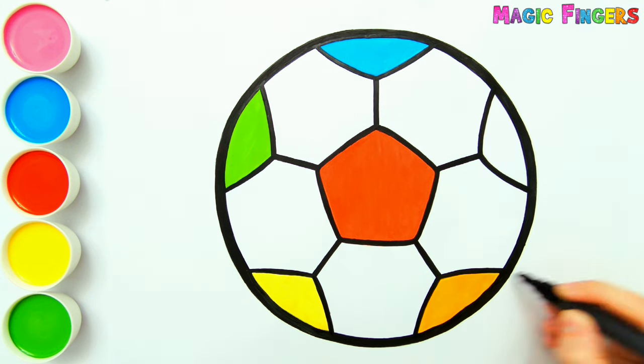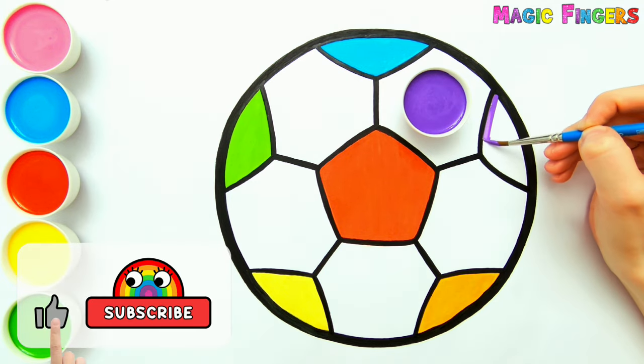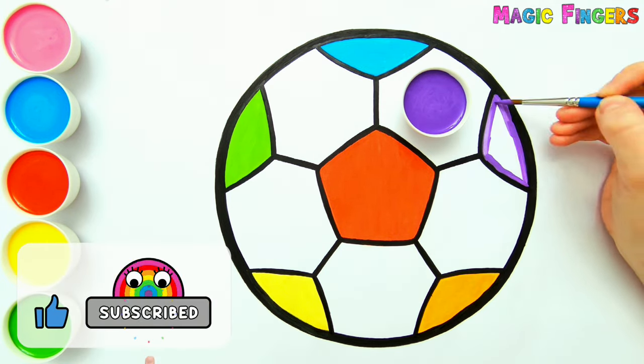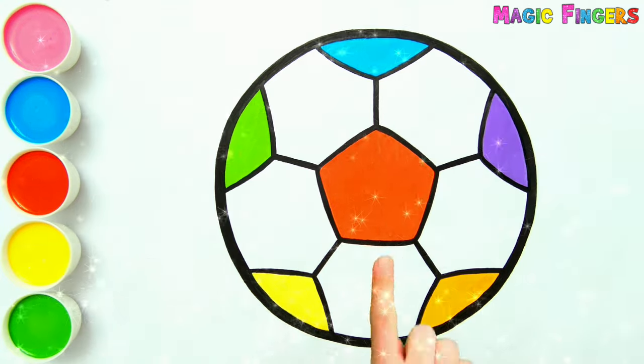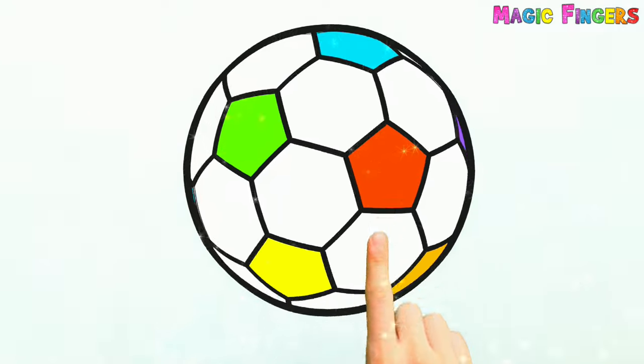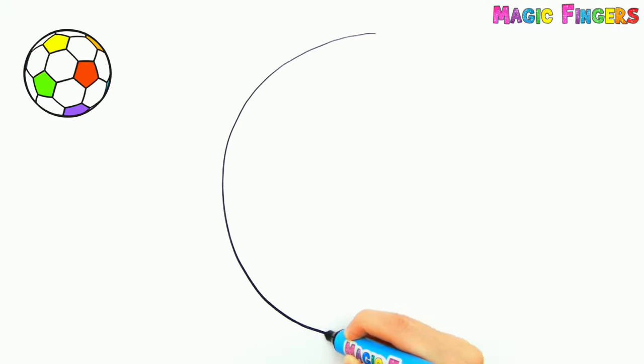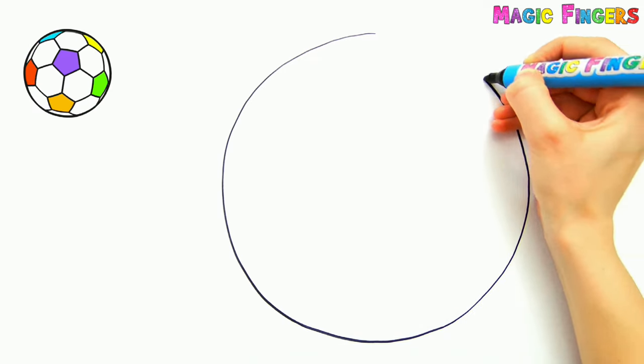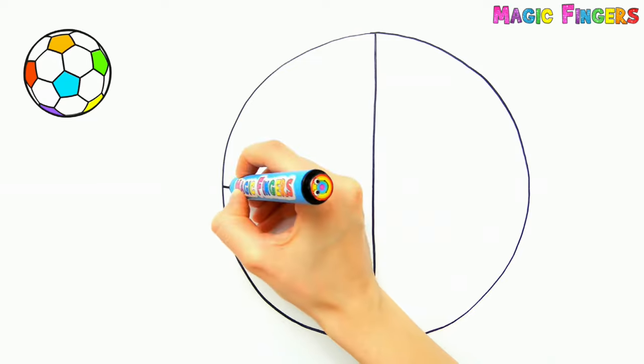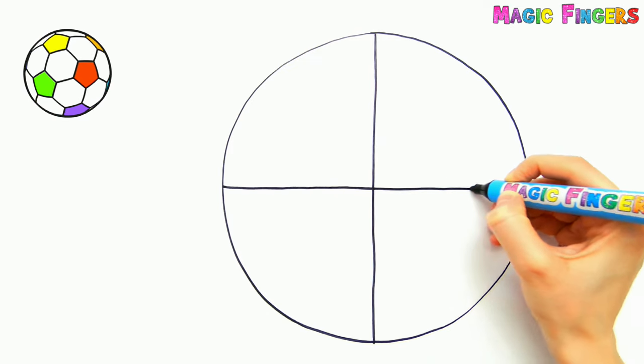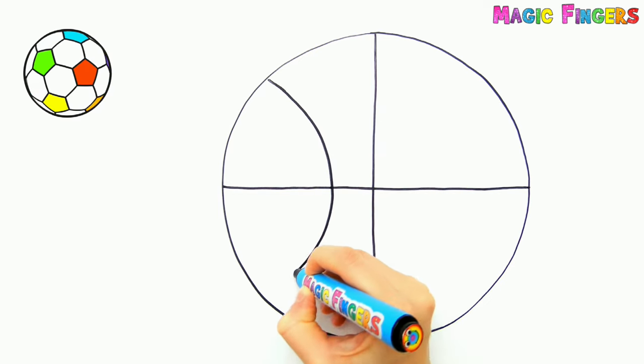Orange. Purple. Look, soccer ball looks so good while spinning. Now I'm drawing a basketball. Do you like to play basketball? Basketball is going to be 3D after the painting too.